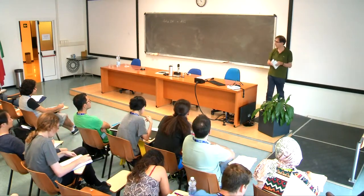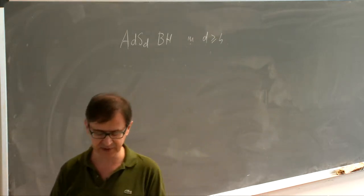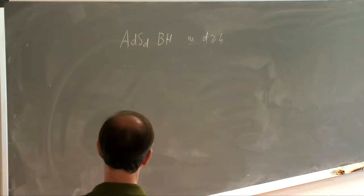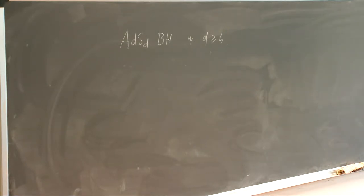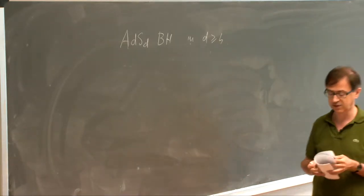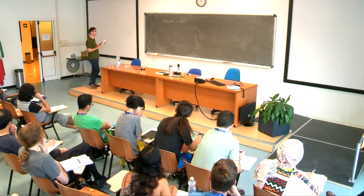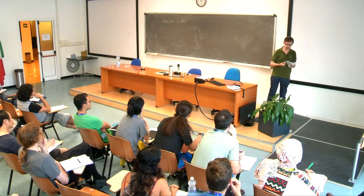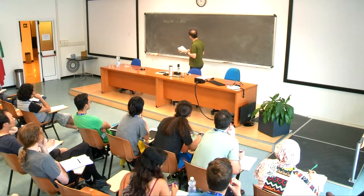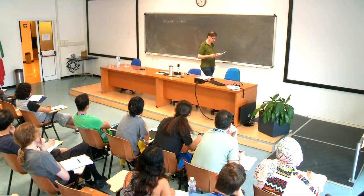Tomorrow, I will discuss how to construct, in field theory using localization, the partition function that is supposed to count the number of ground states of this particular class of black holes in D equal 4. In the third lecture, I will discuss how to evaluate this partition function in the large N limit, comparing with supergravity using holography. And in the fourth lecture — though I'm not sure I will have time — I plan to discuss ADS-5 black strings that can be reduced to ADS-4 black holes.